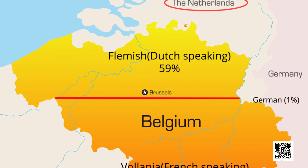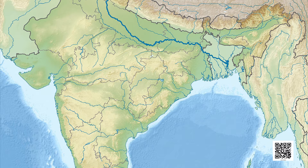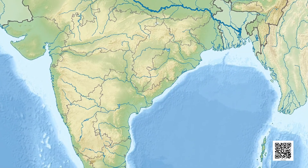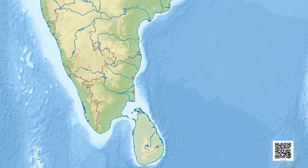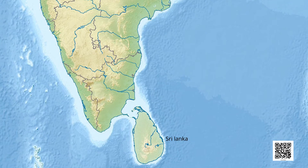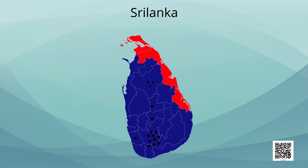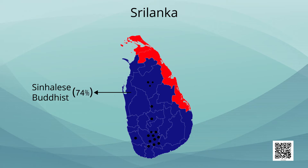So we have discussed the area, languages, and population of Belgium. Now let's discuss Sri Lanka. Sri Lanka is an island country in the southern part of India, lying in the Indian Ocean. In the western, southern, and middle parts, there are Sinhalese people who practice Buddhism in Sri Lanka, and they constitute 74% of the total population.